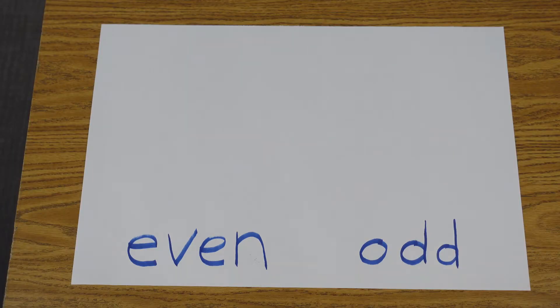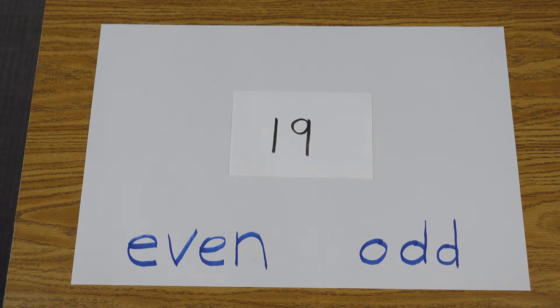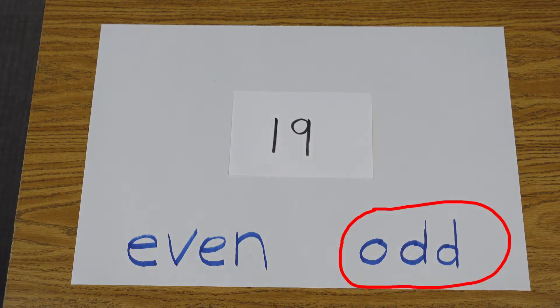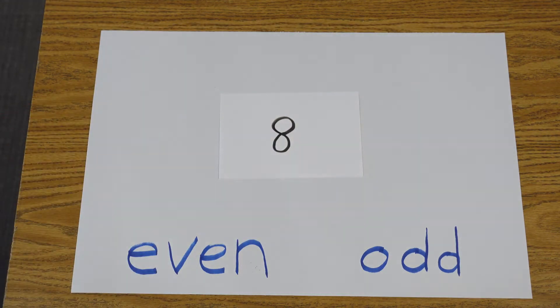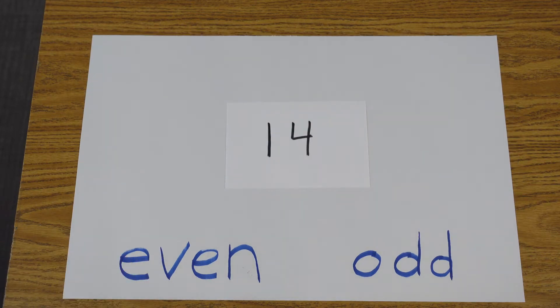All right, let's do some bigger numbers now, all right? What do you think 19 is? You're right. You're looking at the 9 in the ones place. That is an odd number. What about the number 8? Do you remember? Super. 8 is an even number.